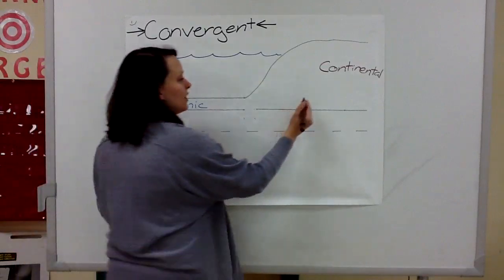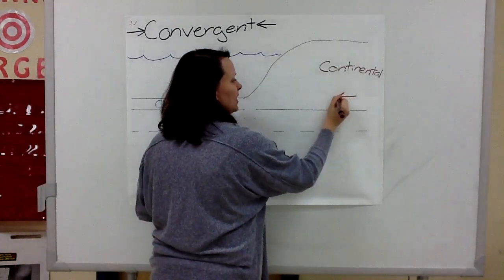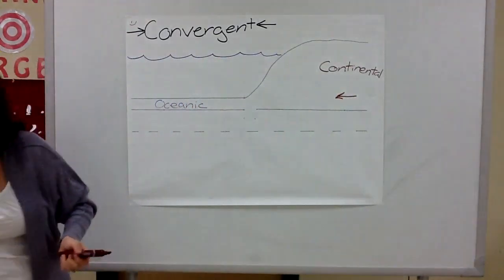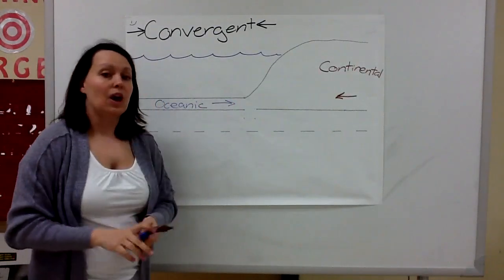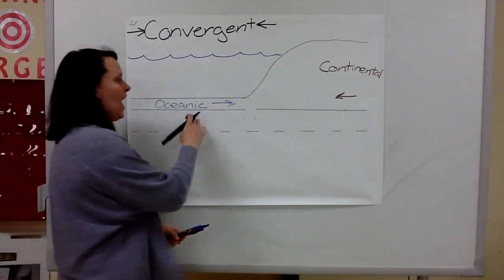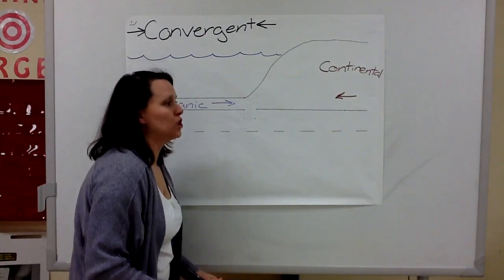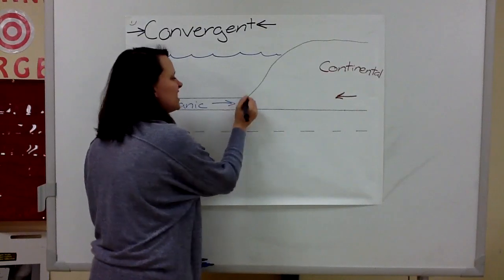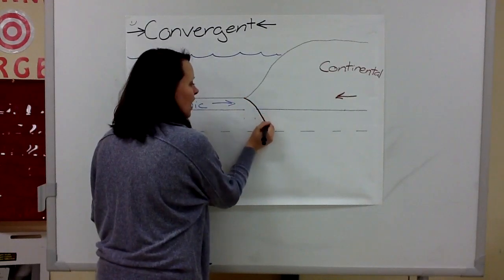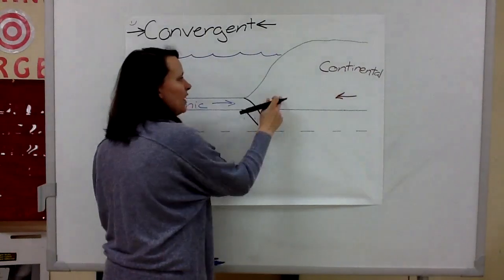So in our picture, this plate is moving this direction, and this plate is moving this direction. Now when they hit, the heavier oceanic plate is going to sink under the continental plate.